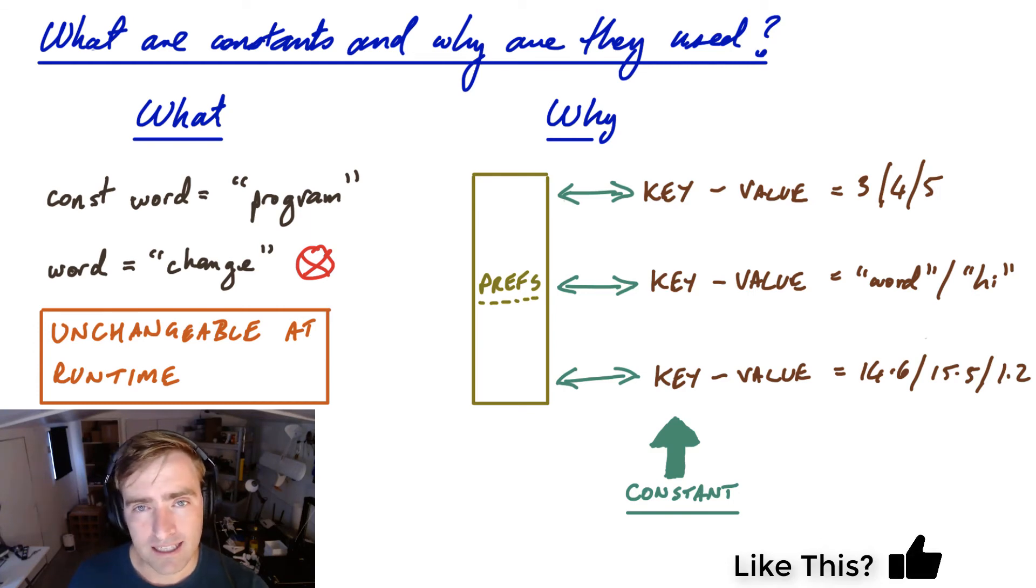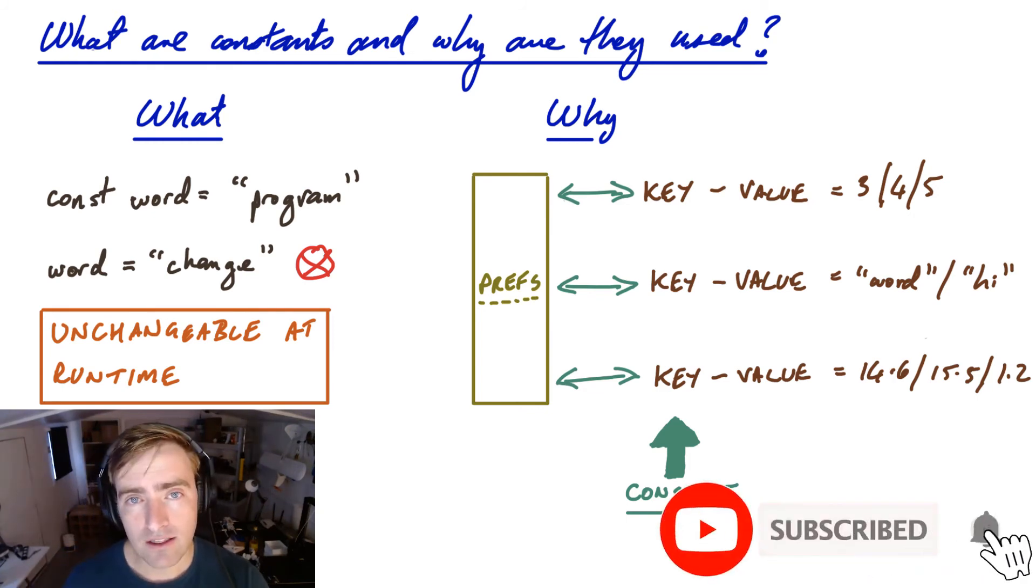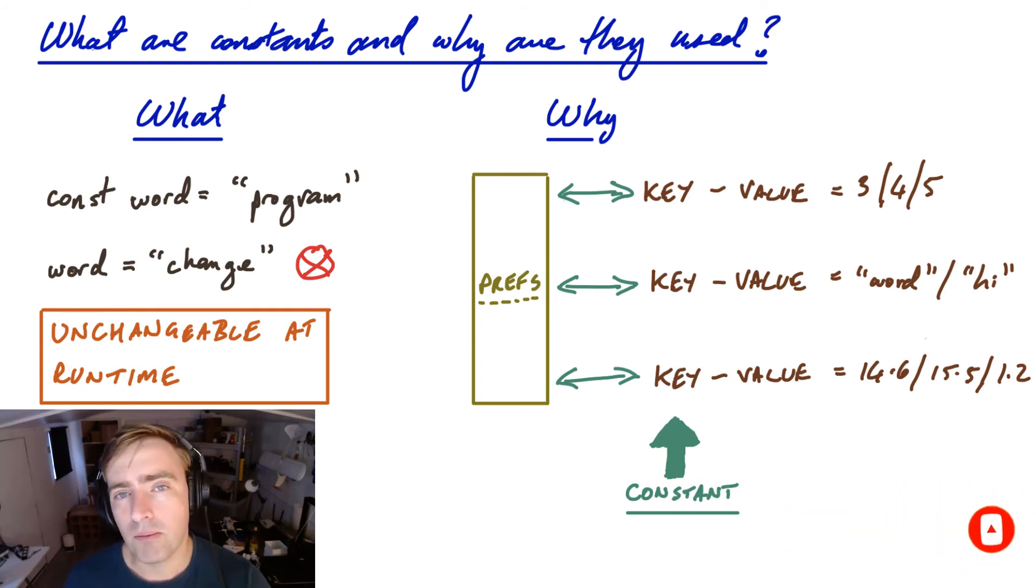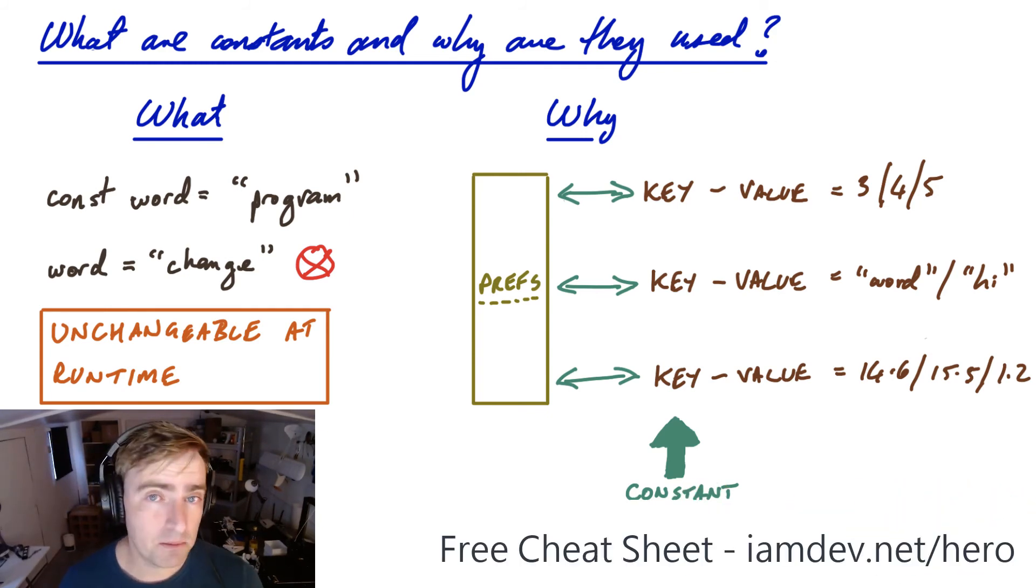And the reason you make it constant in your program is so that you, as the programmer, don't inadvertently change the value of that constant or variable somewhere in your program. Because if you do that, then you're going to get unexpected results. You won't be able to reach your server. Your preferences will look a little weird and things won't stick the way that you expect them to.